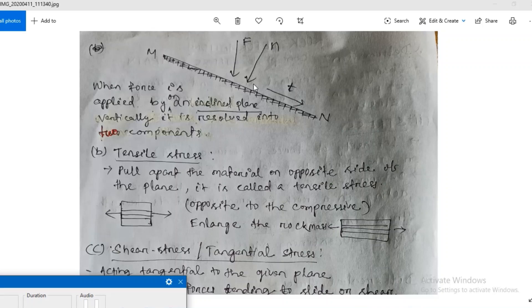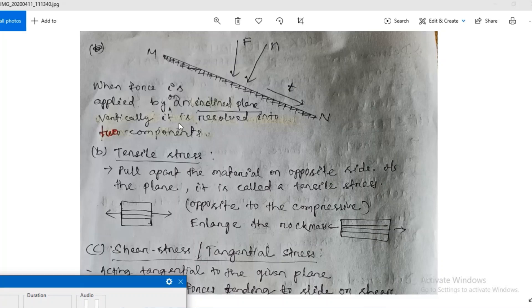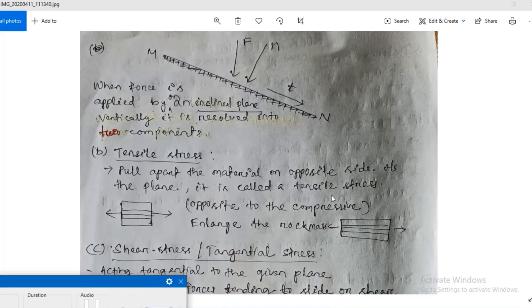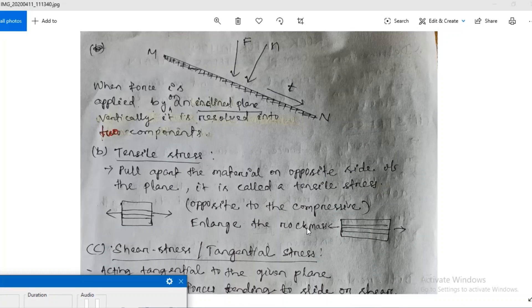When two same forces are acting toward each other, then it is called compressive force. But when two forces pull apart the material on opposite sides of the plane, it is called a tensile stress, opposite to the compressive strength. And this tensile stress enlarges the rock mass.